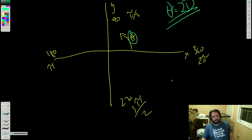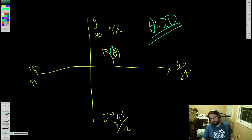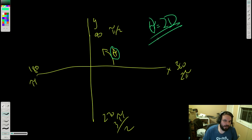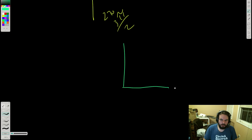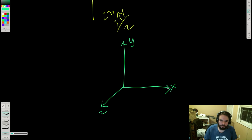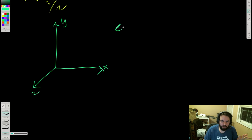Three dimensions is a little bit trickier. There are lots of ways to represent rotations. The first way, which I'll talk about very briefly, is something called Euler angles. Euler angles are just a rotation around x, a rotation around y, and a rotation around z.